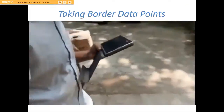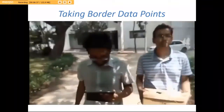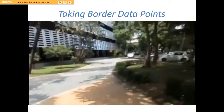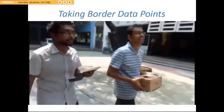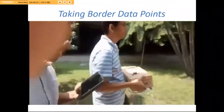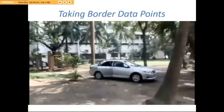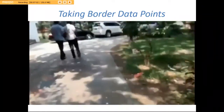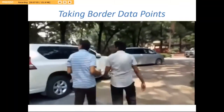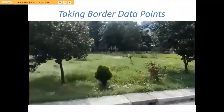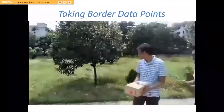Now we are taking the border data points at BUET Campus. We are walking along the BUET Central Library Road to the Architecture Building, and then moving on from the Architecture Building to the Palasi Bazar, from where we will go to the ECE Campus. Now we are at the ECE Campus taking our border data points, and we have completed taking the border data points.